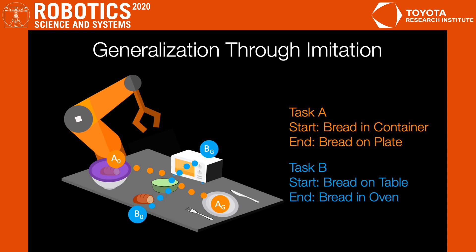Note that both tasks require the robot to place a bread in the green bowl. In other words, these task trajectories intersect in the state space. The robot should be able to generalize to new start and goal pairs by choosing different paths at the intersection, as shown in the picture.